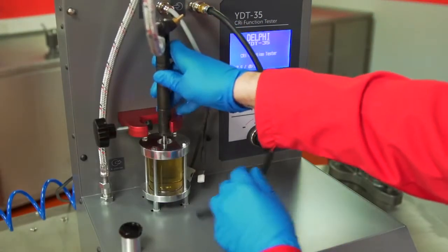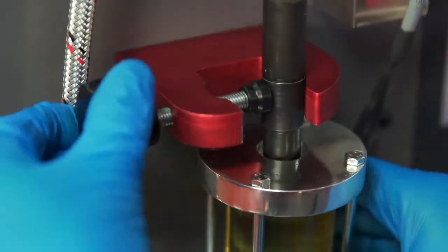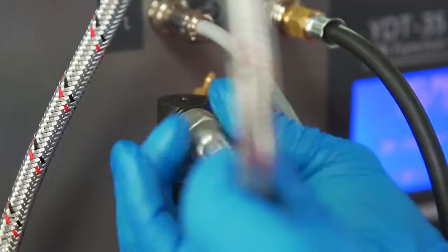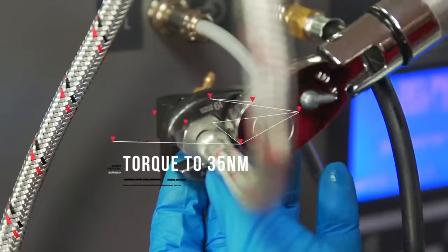To mount the injector, place it in the universal mount. Line up the spray chamber and tighten both injector and chamber in place. Once secure, fit the flexible high-pressure pipe and torque correctly to 35 Nm.